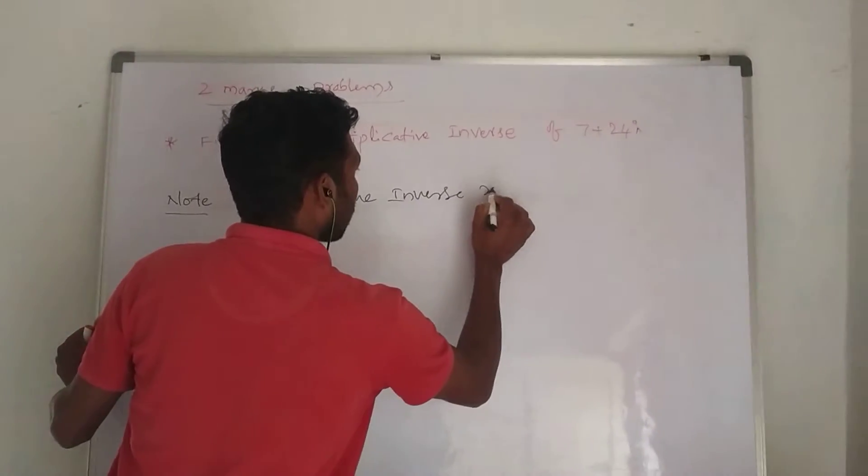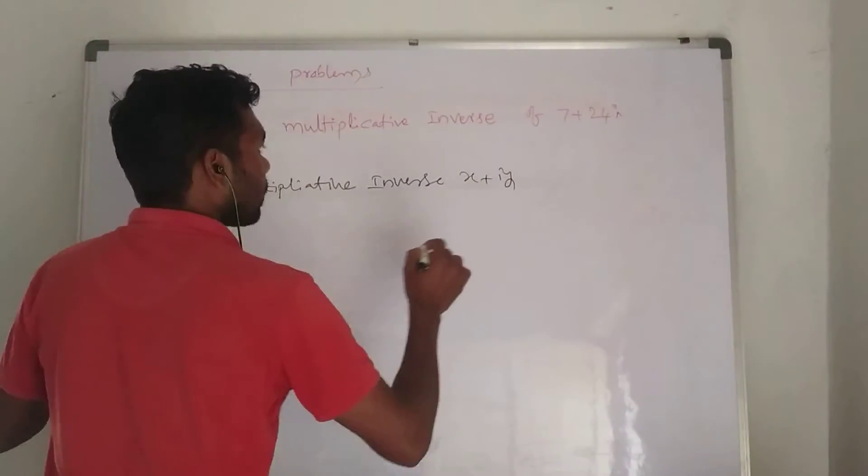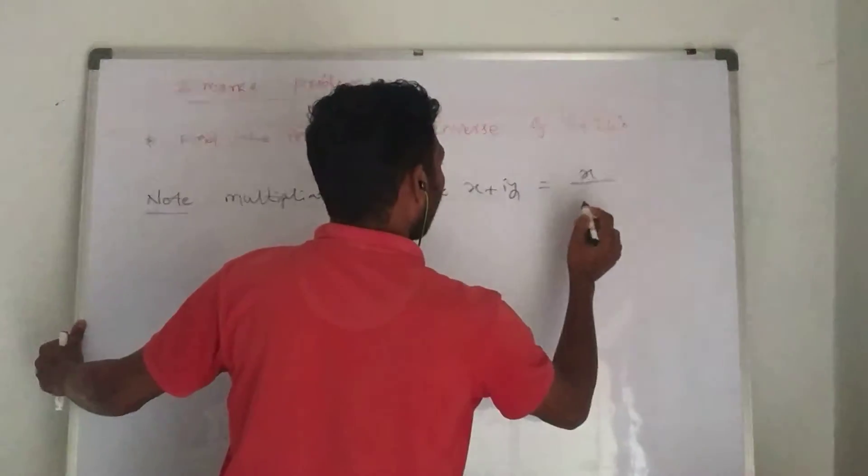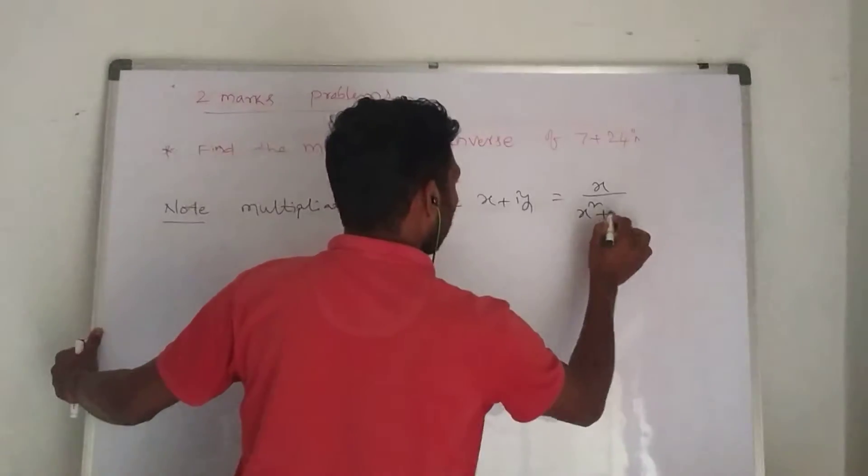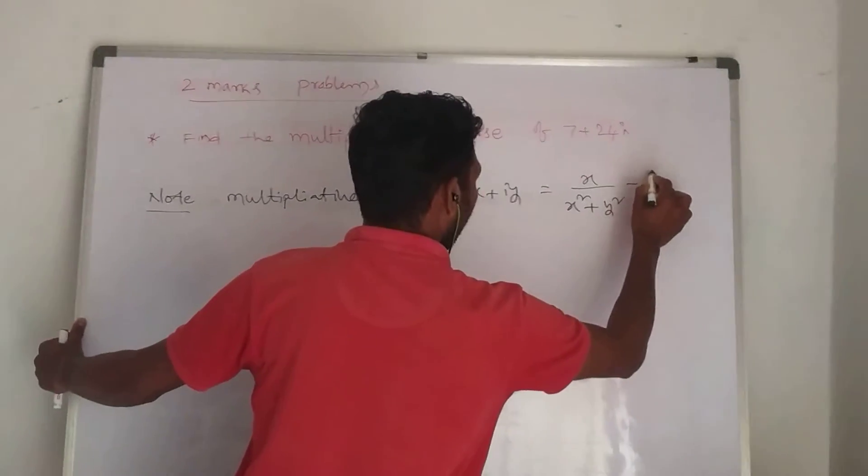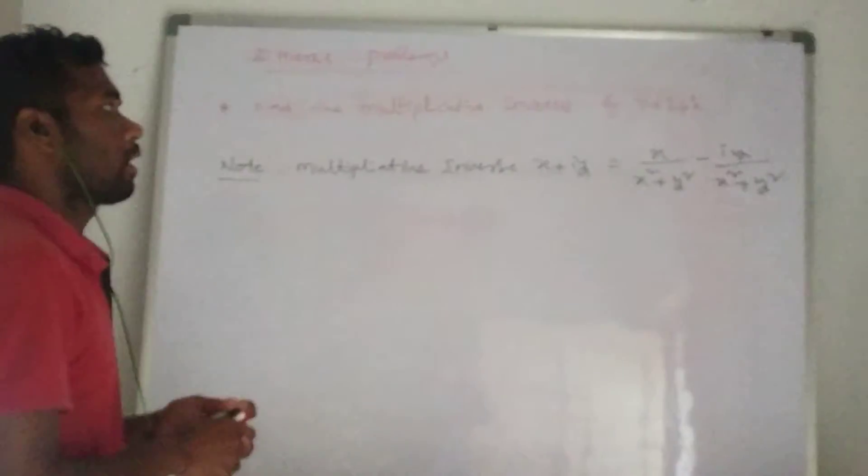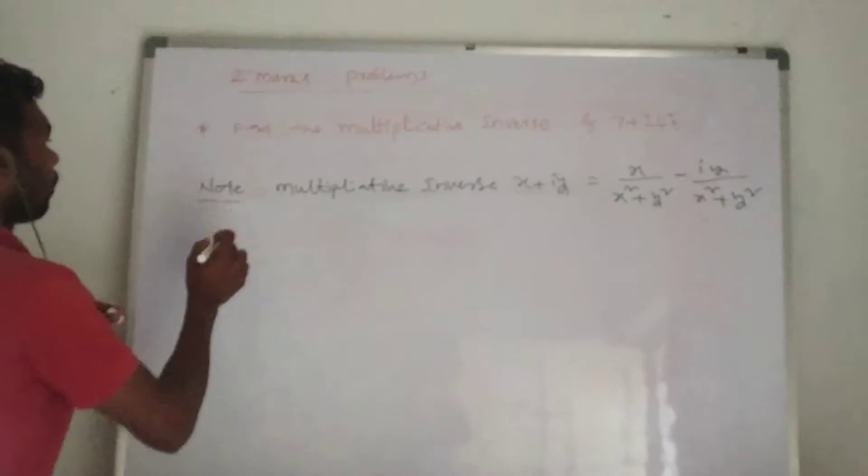The multiplicative inverse form for x plus iy is: x divided by x squared plus y squared, minus i times y divided by x squared plus y squared. This is the multiplicative inverse formula.